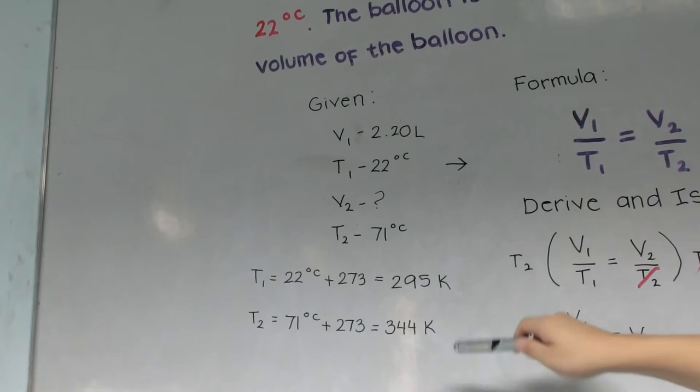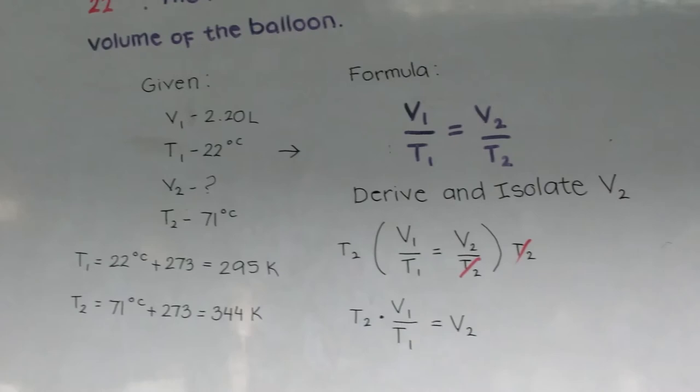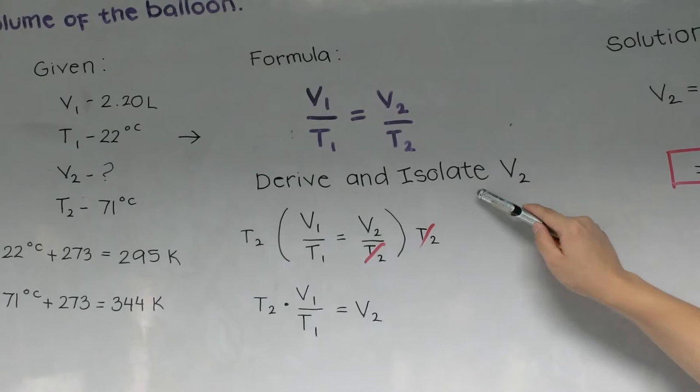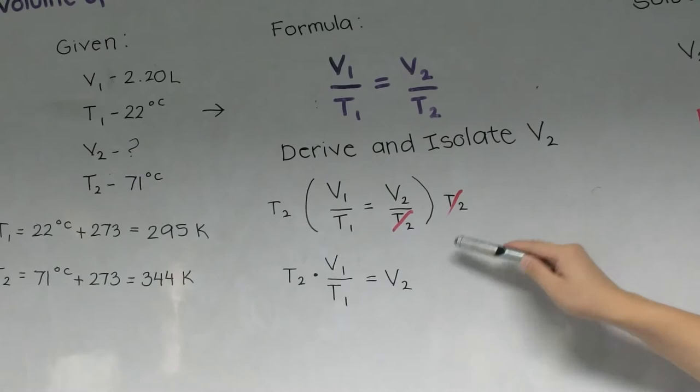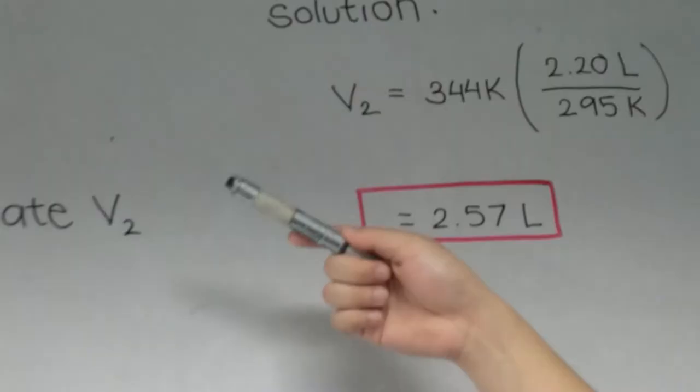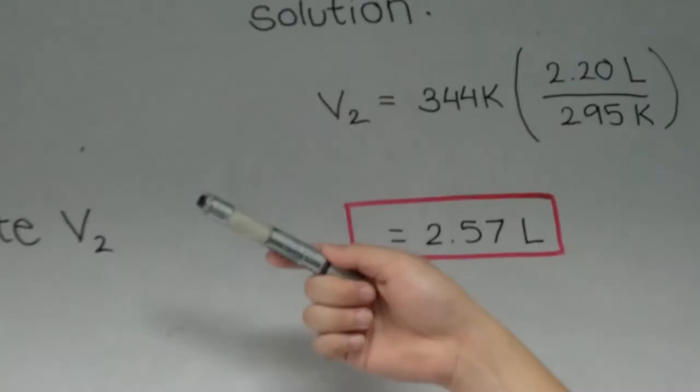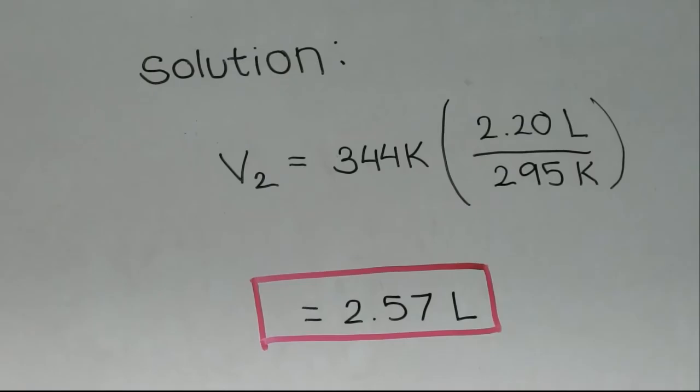Now, we rearrange the equation algebraically to solve for V2. We isolate V2 by multiplying both sides by T2, arriving at the formula: V2 = T2 × V1 / T1. Substitute the known quantities into the equation and solve — don't forget to round your final answer to three significant figures. We arrive at 2.57 liters as our answer.